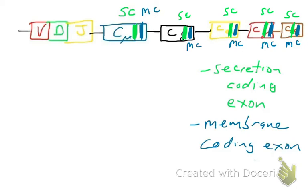We'll get into more detail in later videos about how a B cell switches from making IgM to IgA or IgG. That's a separate process known as isotype switching, which we will cover later.